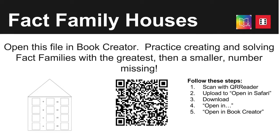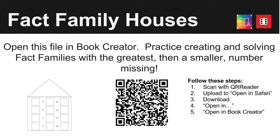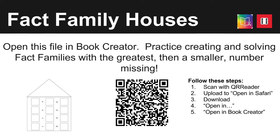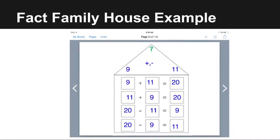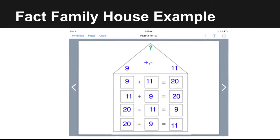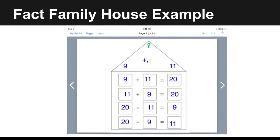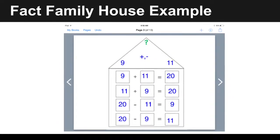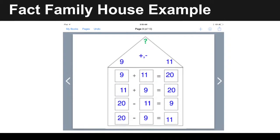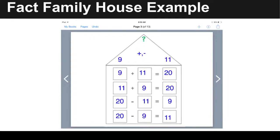Then they can solve for the missing third number. Students ready for a challenge automatically created two-digit numbers in order to practice their math fact fluency within 100. Here's an example of what one page of their Book Creator book may look like — this page had them solve for the missing greater number, practicing addition within 20.